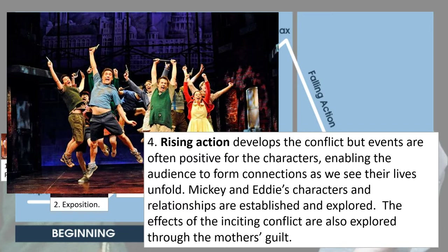Next we have what we can call rising action. In rising action, the conflict is still there and still developing, but events unfold often positively for the characters — and this is crucial because it enables the audience to form connections with those characters. We are introduced to Mickey and Eddie, their characters and relationships are established and explored, and we begin to form an attachment to these two quite likable kids. The effects of the inciting conflict — the fact that their lives are a lie — are still beneath the surface, still developing, as we see the impact of the separation on the two boys' separate lives. We also get that conflict presented through the guilt that Mrs. Johnson and Mrs. Lyons experience in this rising action.